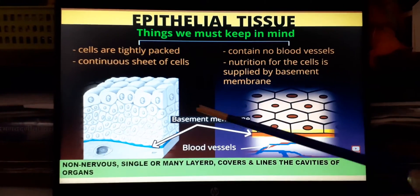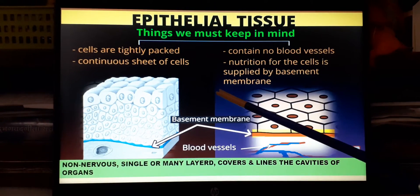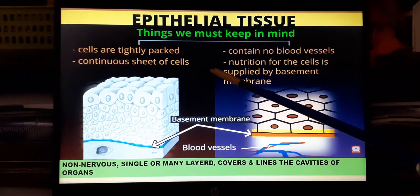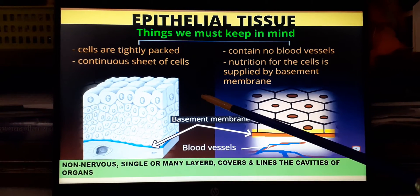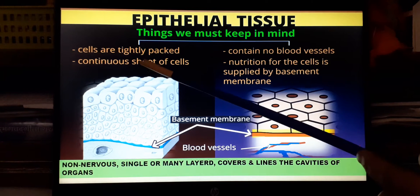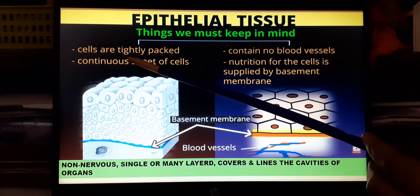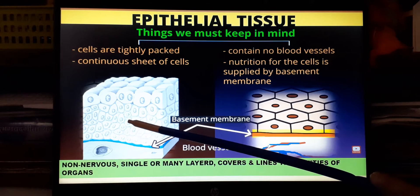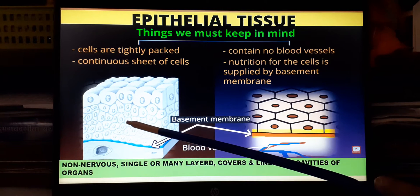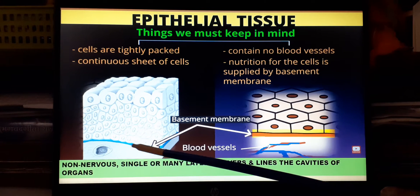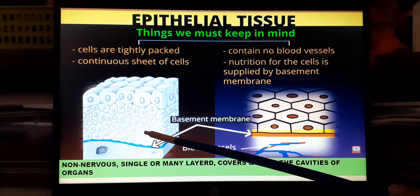First we will discuss the epithelial tissue and its various characteristics. The cells under the epithelial tissue are very compactly packed, and these compactly packed cells may be arranged in a single layer or in many layers.